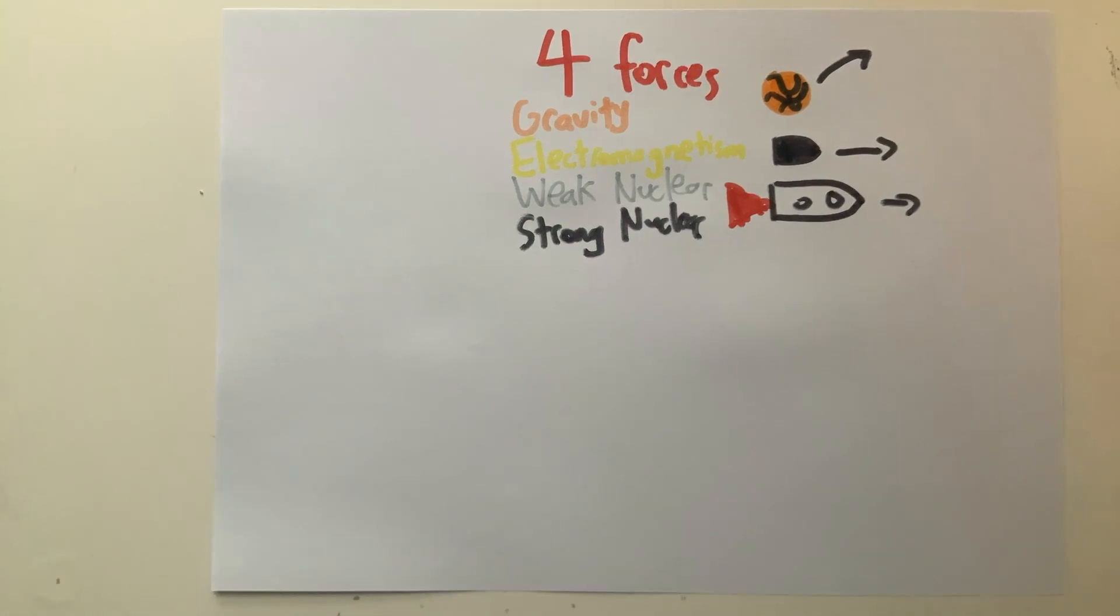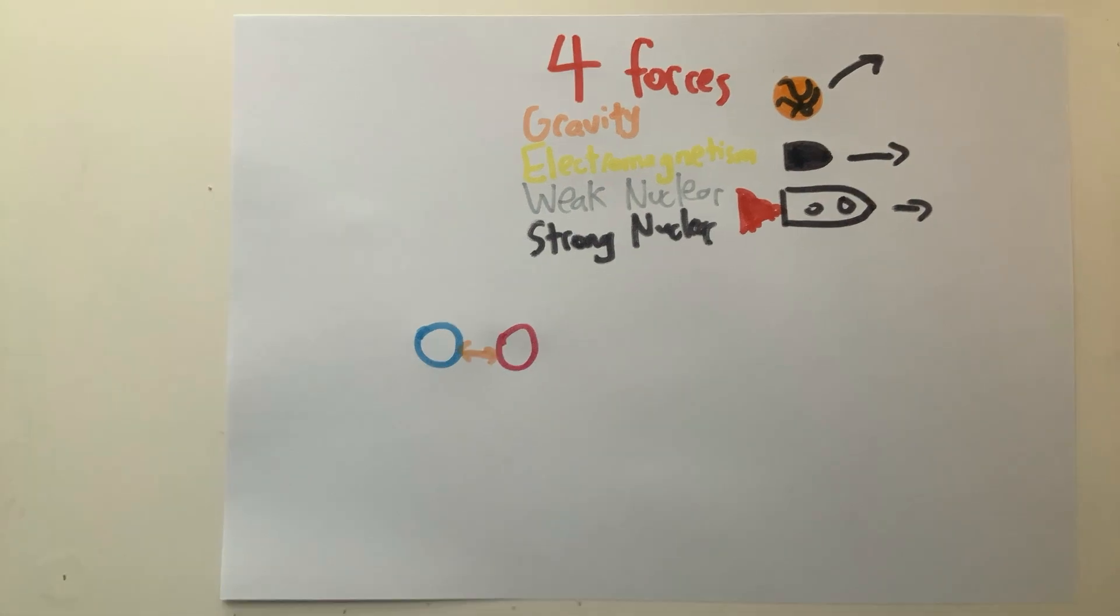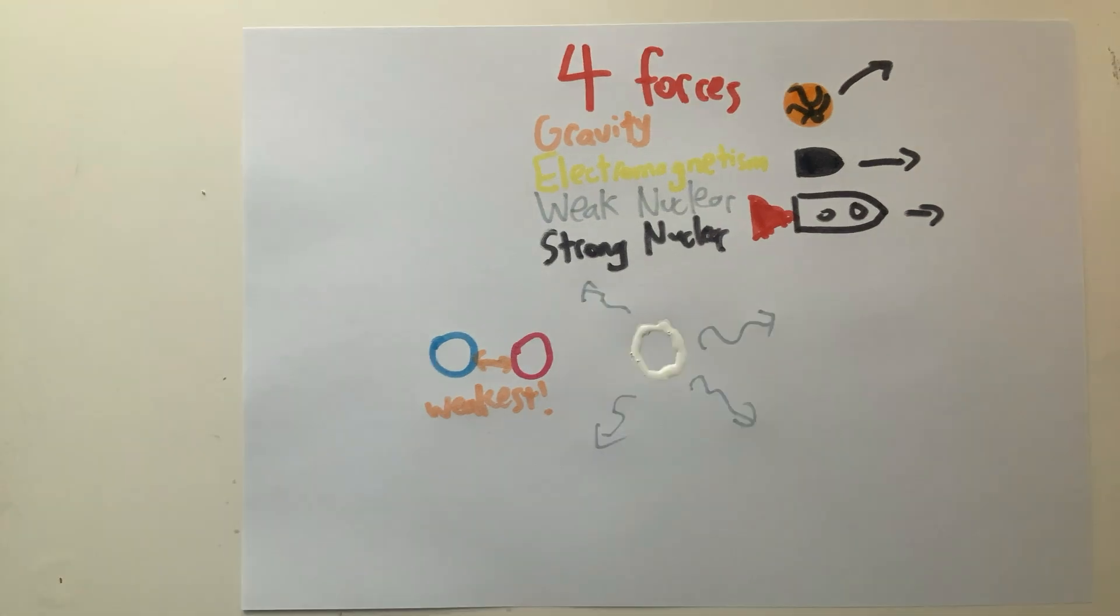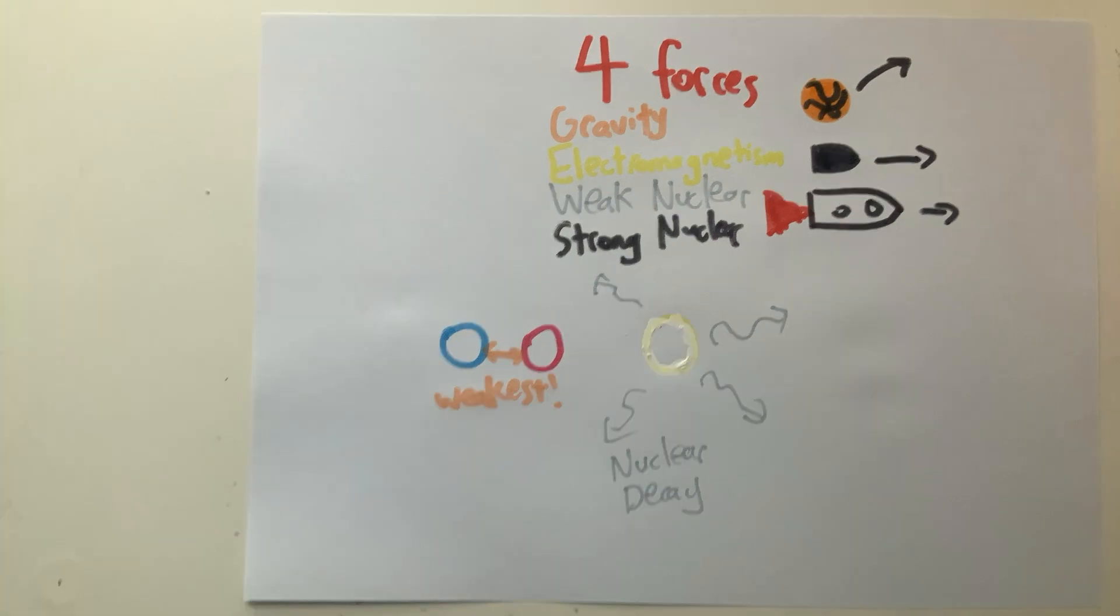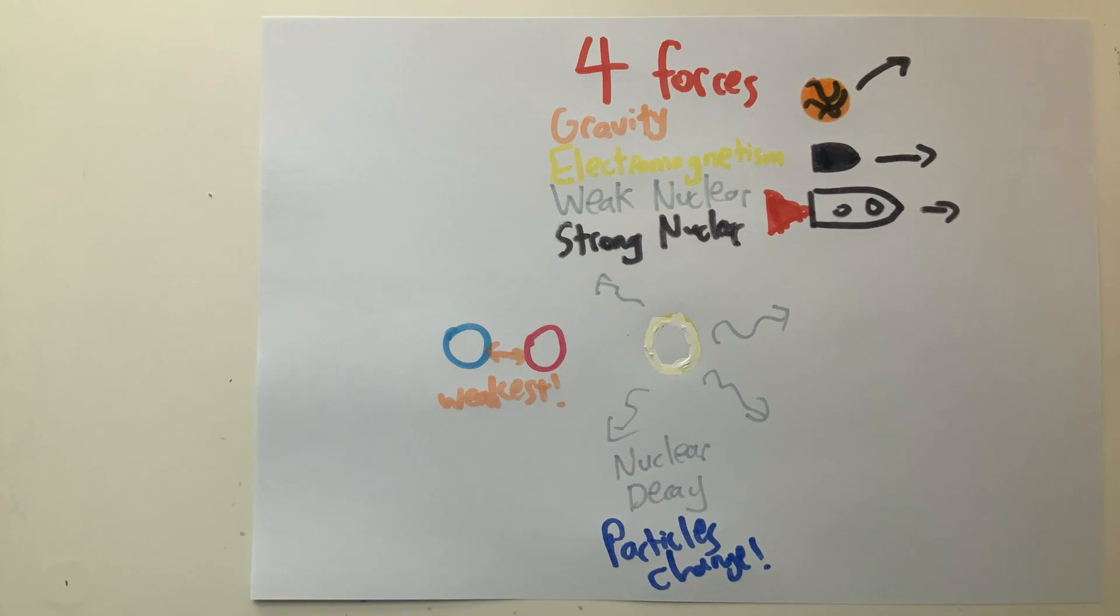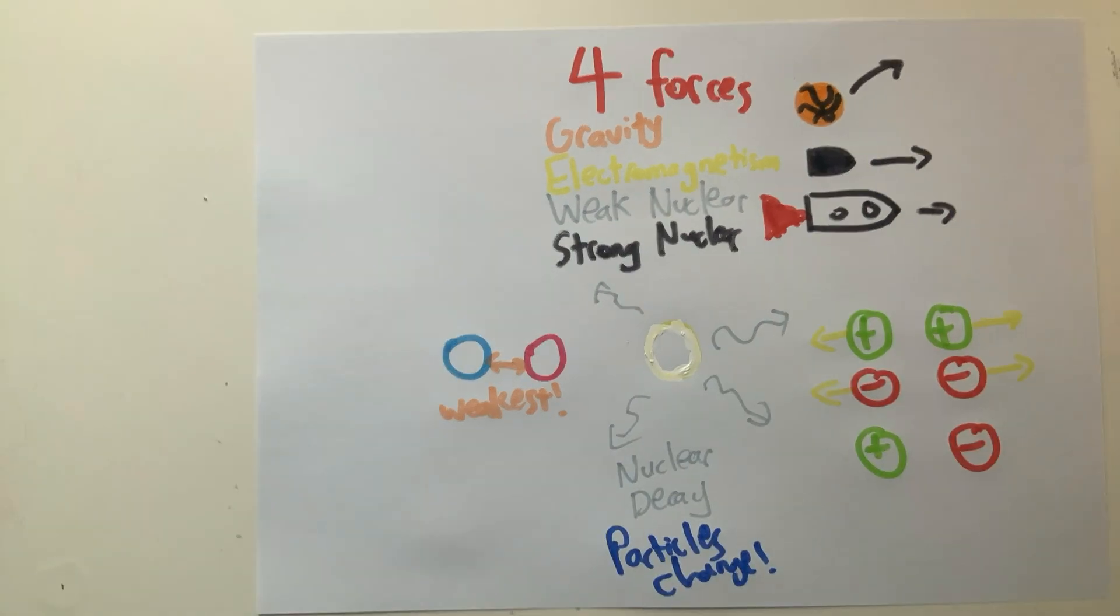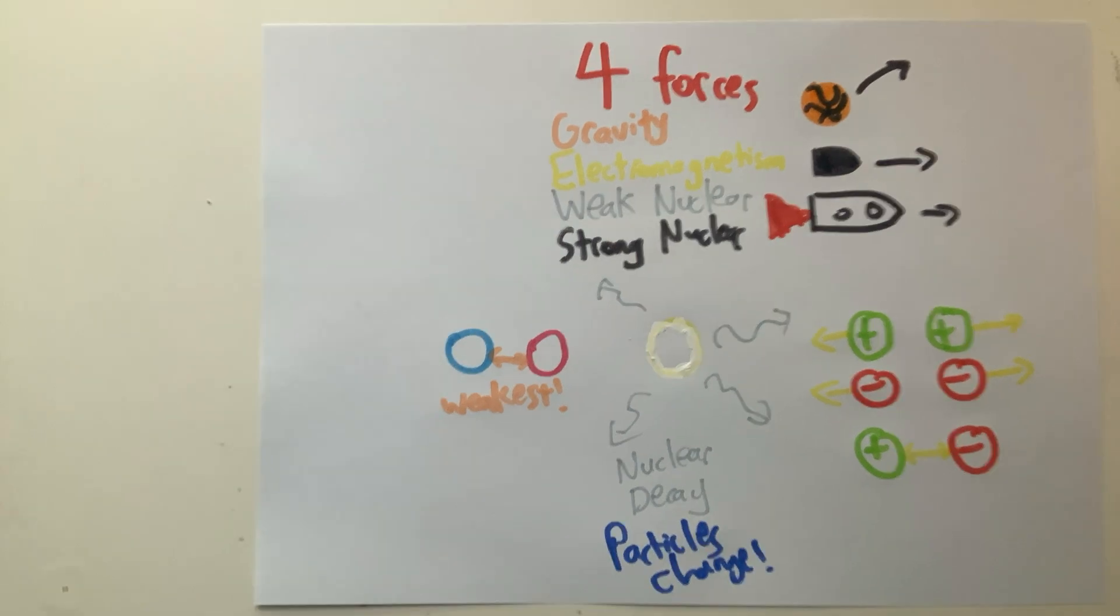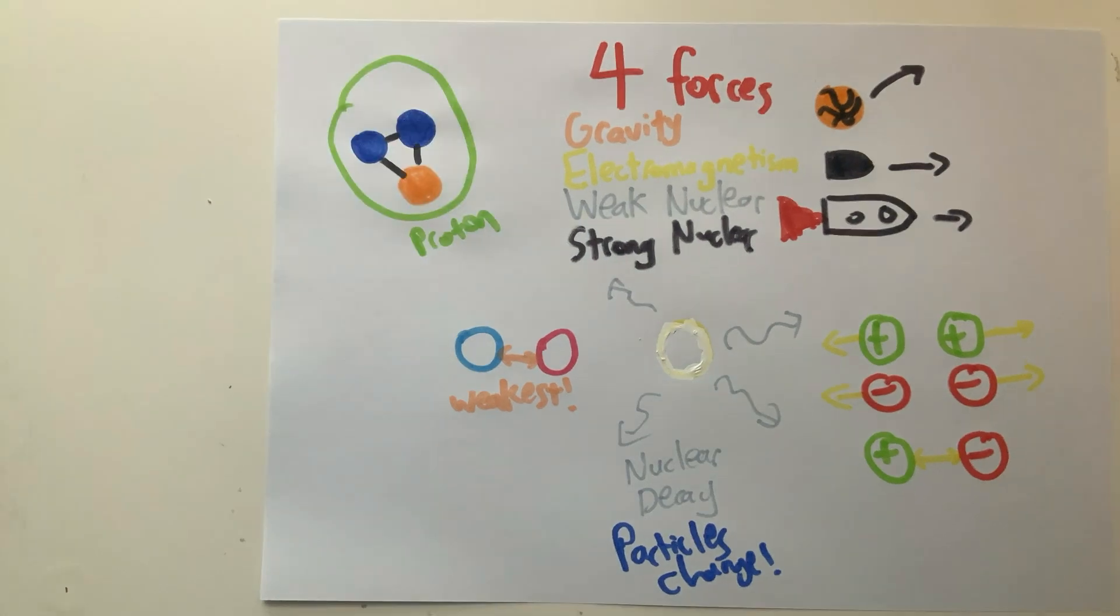Gravity is the force of attraction between any object with mass and energy, and the weakest of the four forces. The weak nuclear force, meanwhile, is the force responsible for nuclear decay. Through this process, particles can change from one to another. Electromagnetism is the force that occurs between charged particles. Like charges repel each other, while opposite charges attract each other. The strong nuclear force, the strongest of the four, is the force responsible for holding together protons and neutrons.